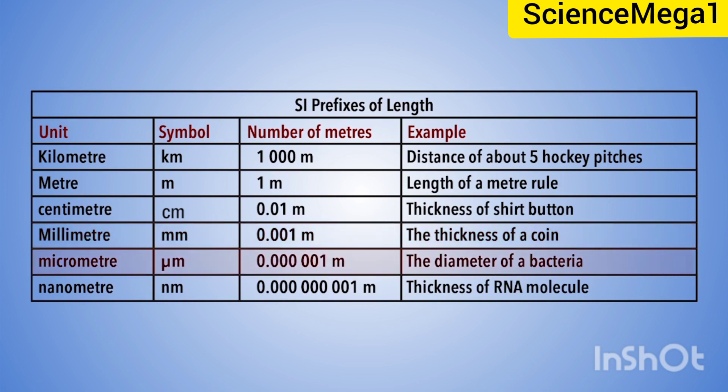We also have micrometer, which has the symbol μm, and the number of meters is 0.000001 meter, which is the diameter of a bacteria. Last but not the least, we have nanometer, symbol nm. The number of meters is 0.000000001 meter — for example, the thickness of an RNA molecule.